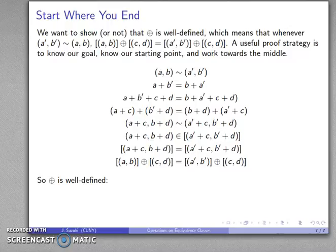One minor qualifier: in this proof we only changed the first representative. We should also check that changing the second term gives the same result. We'll leave that as an exercise and continue to talk about equivalence classes next.